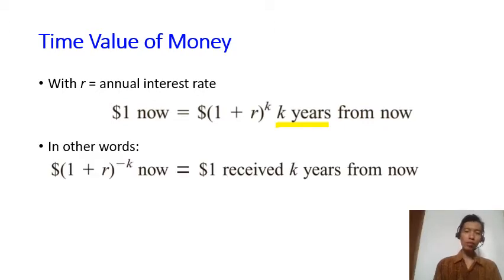This means that if you have one dollar k years from now, it is equal to one plus r to the minus k now. So this is the present value of this one dollar that you will receive in the future or k years from now.